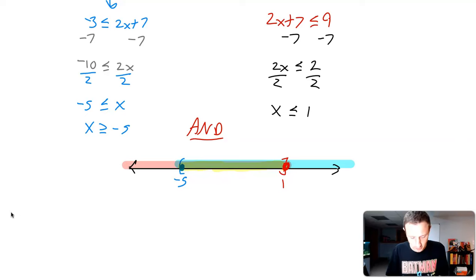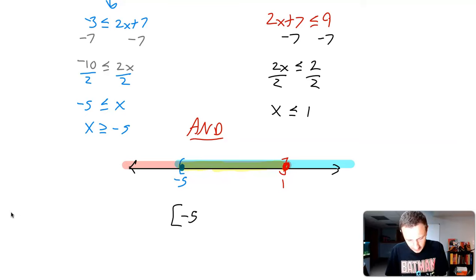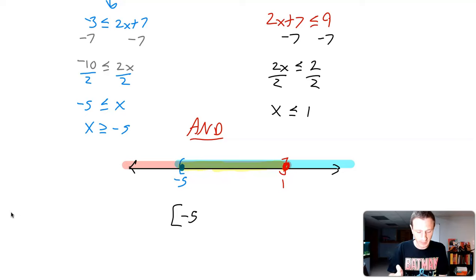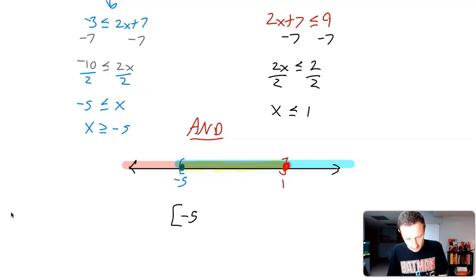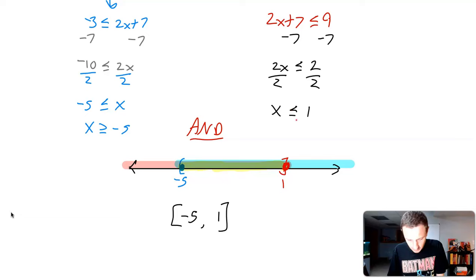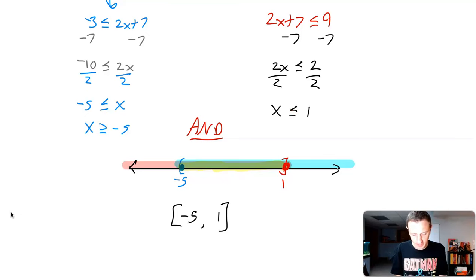So my interval notation is going to be bracket negative five, bracket one — brackets on both ends because we have 'greater than or equal to' and 'less than or equal to', meaning we include both endpoints. Any number in the zone between negative five and positive one could be a solution to this inequality.